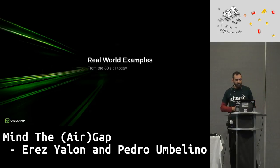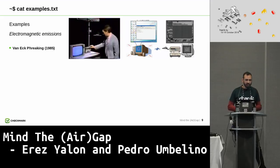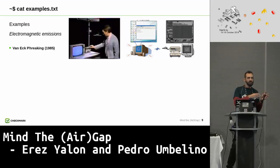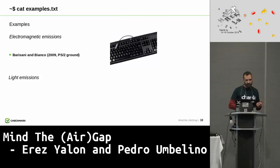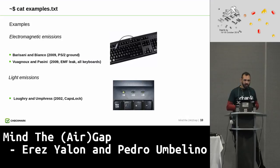Looking at real-world examples: it's hard to discuss air gapping without mentioning Tempest and VanEck freaking. In 1985, VanEck discovered that CRT monitors emit radiation very similar to television transmissions. He set up an antenna and decoded what was on a CRT screen from 200 meters away. Later, Marcus Kuhn did the same with LCD screens. Another example: Loughry and Umphress devised a malware in 2002 that blinked the caps lock LED at a very fast rate to exfiltrate data.